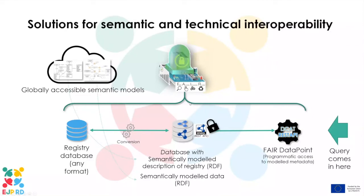In a FAIR registry, you have semantically modeled data as part of your registry. You need to access that, so there needs to be some computational element that allows you to query that information — and that is what a FAIR data point is. Rajaram can explain it in much more detail. It is programmatic access to this modeled metadata. The query comes in through this access point, queries that information, and eventually fetches the actual data to compile an answer.